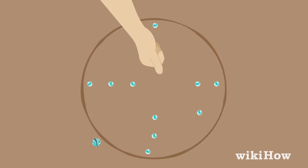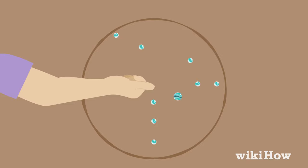A player can continue shooting until they either don't knock out a MIB or they knock out a MIB but their marble exits the circle. If a player's marble lands in the circle but doesn't knock out a MIB, their turn is over and their marble stays where it is until their next turn.